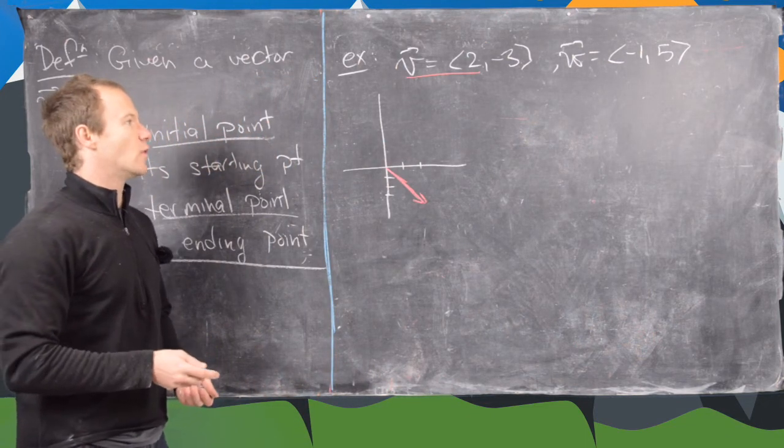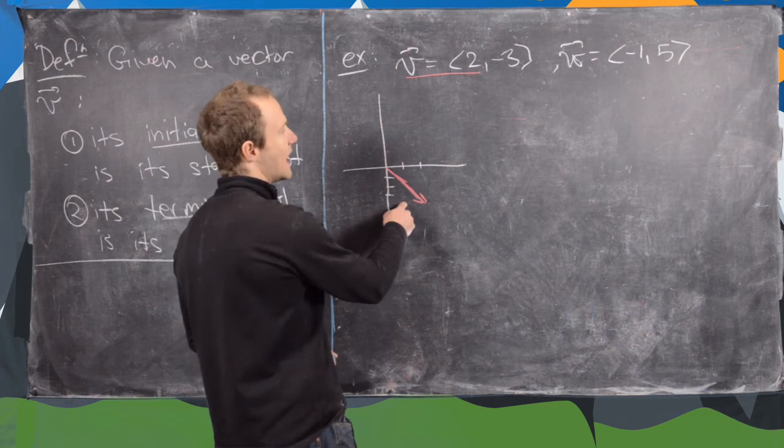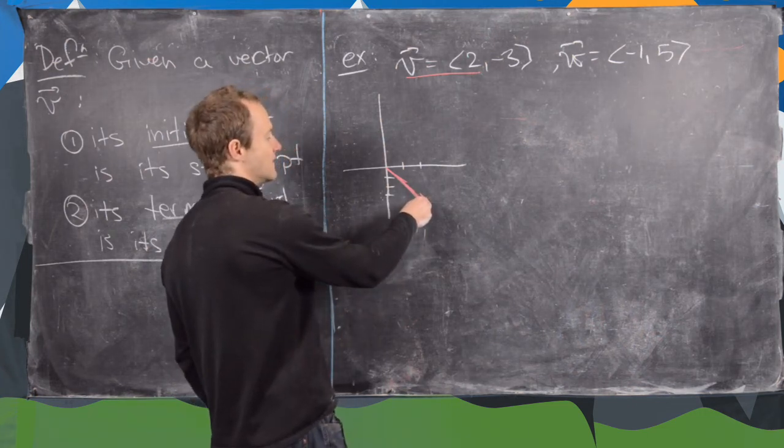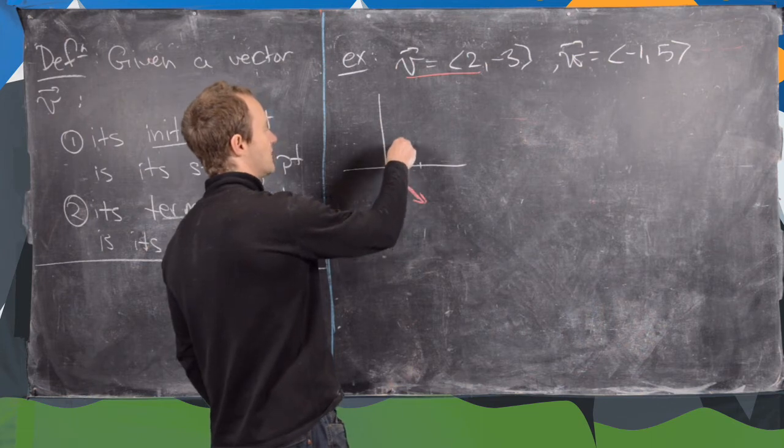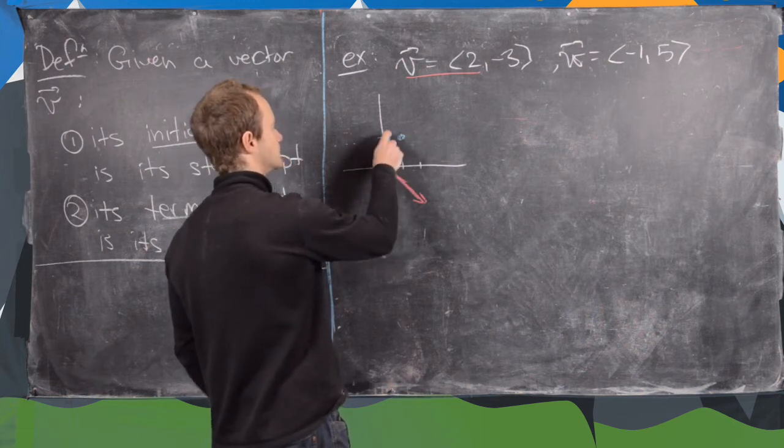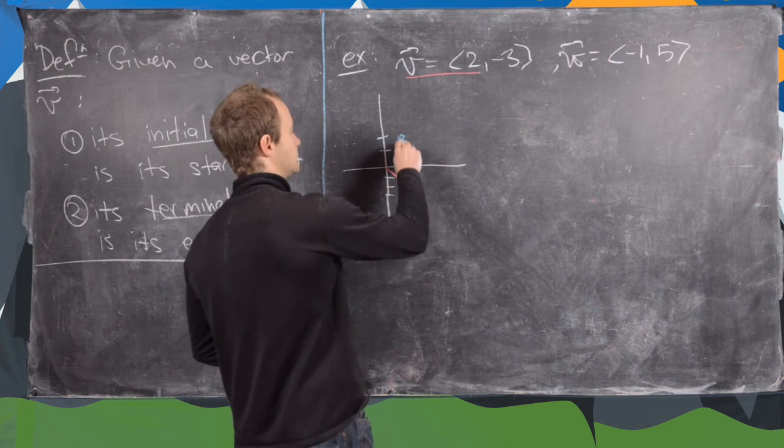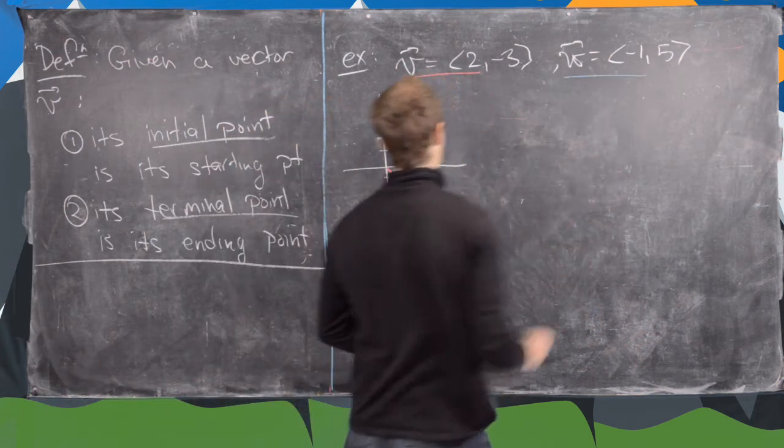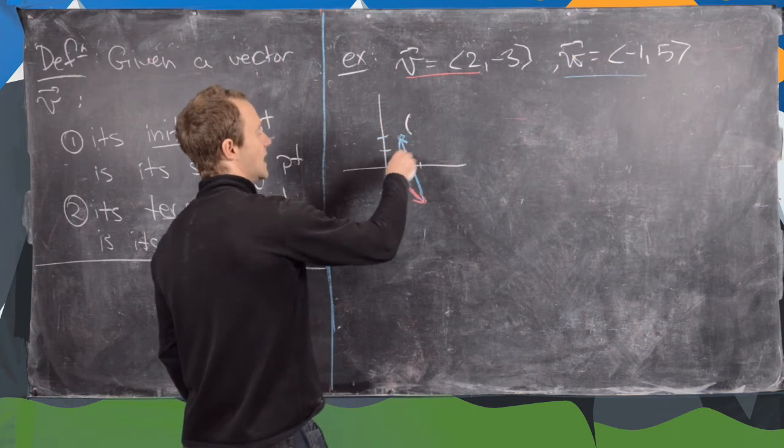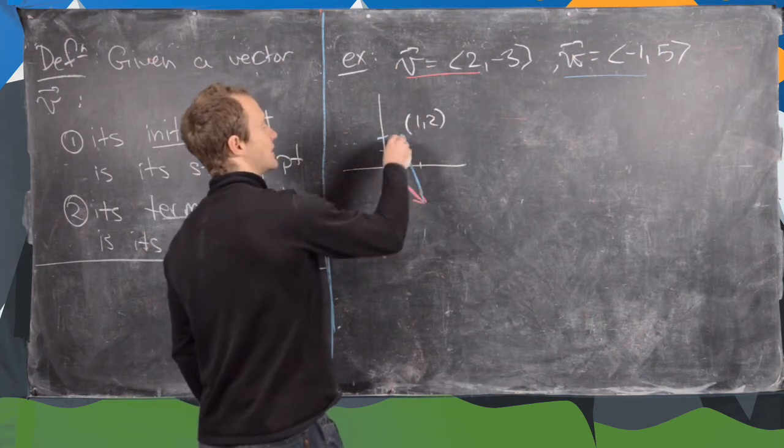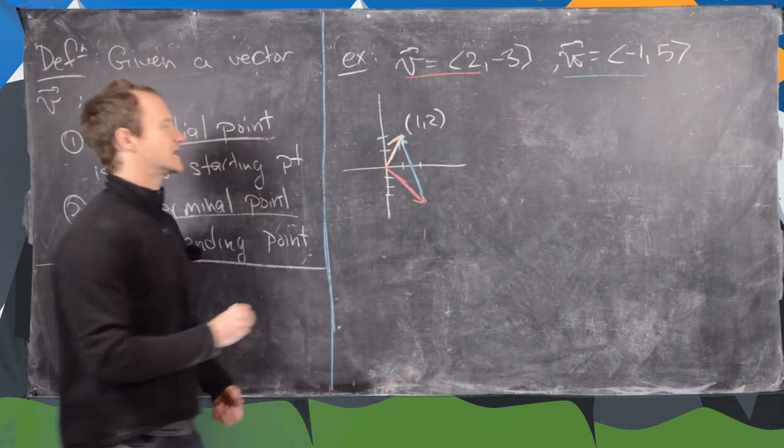And now W is (-1,5). So that's going to put us backwards 1 unit and up 5. So if we do that from the terminal point of V, we'll go here, back 1, and then up 1, 2, 3, 4, 5. So that would be up here. So let's draw W going up that way. Let's underline that in blue. And now just reading it off, it looks like this should be the coordinate (1,2). So that's this final terminal point. But we can draw that in. And that will end up being the sum of the vectors.